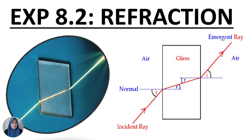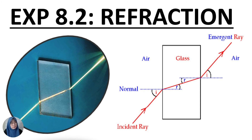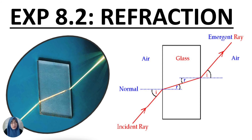Refraction of light in our daily life: example number one — a swimming pool appears to be shallower. When we look into a swimming pool, it appears to be shallower than its actual depth. This is due to light rays from the bottom of the swimming pool being refracted away from the normal when passing from the denser medium to the less dense medium. The depth viewed from the top is known as apparent depth, and the apparent depth is less than the actual depth. That is why the swimming pool appears shallower — same concept applies to the deep pond.